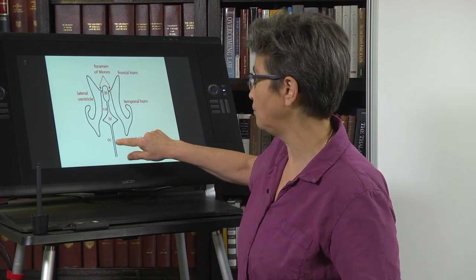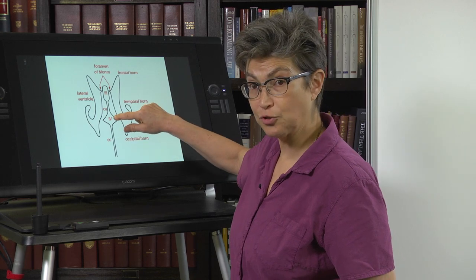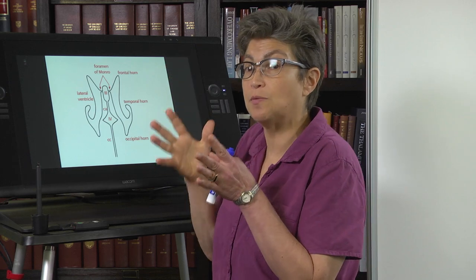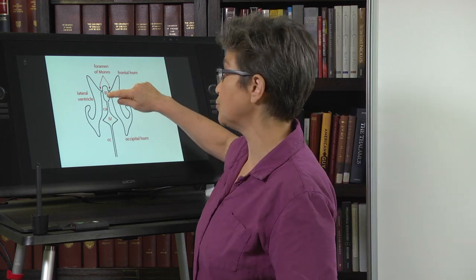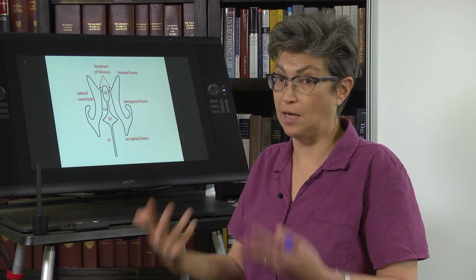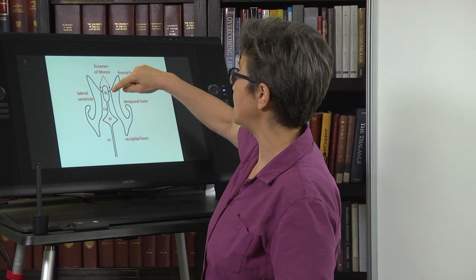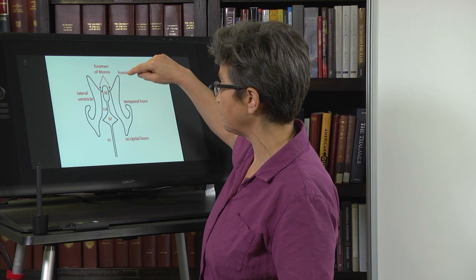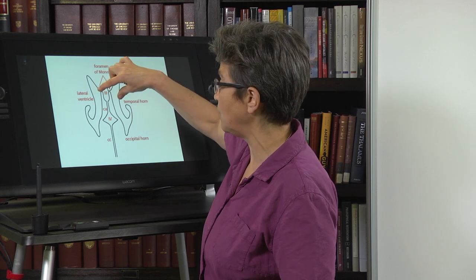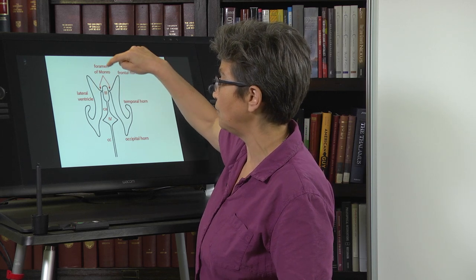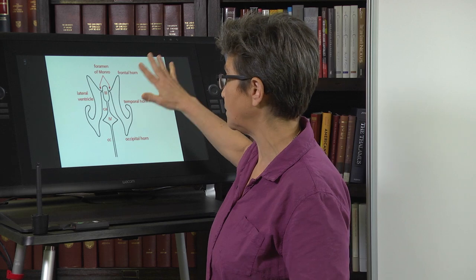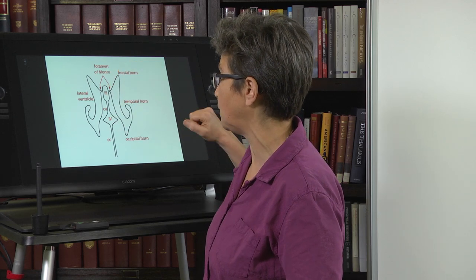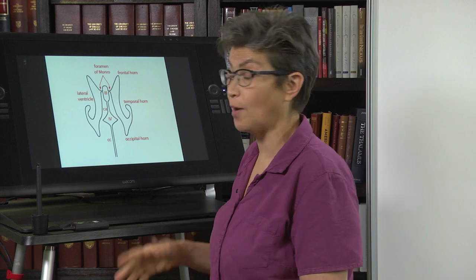The central canal and fourth ventricle serve the hindbrain. The cerebral aqueduct serves the midbrain. The third ventricle serves the thalamus and hypothalamus. There is a connection between the third ventricle and the lateral ventricles on either side that serve the cerebrum — that connection is called the foramen of Monroe.